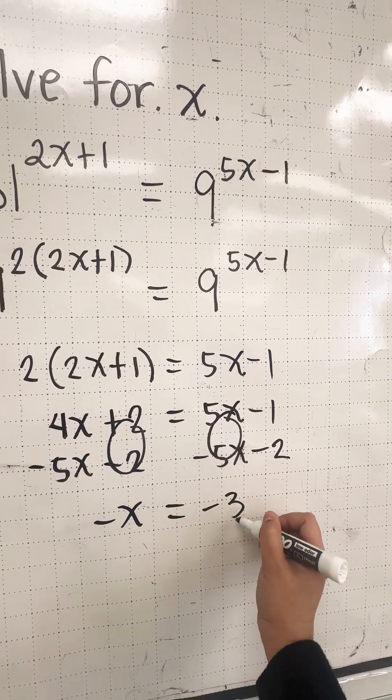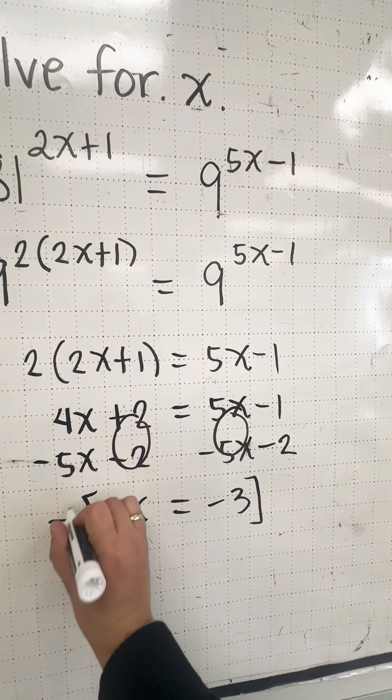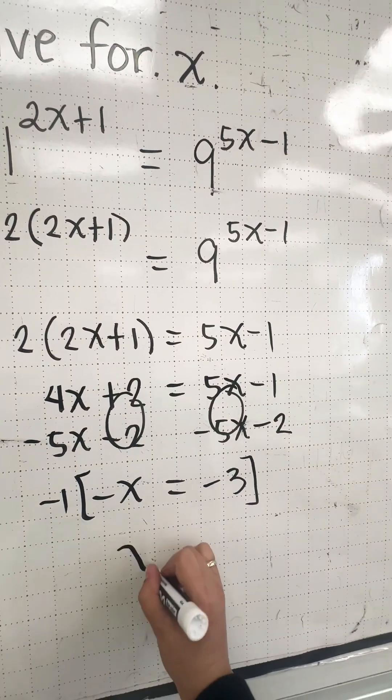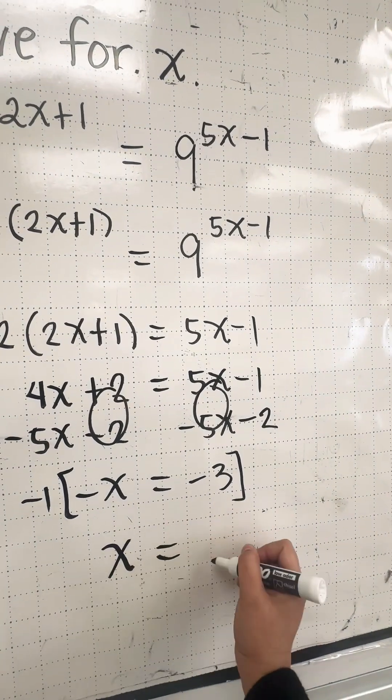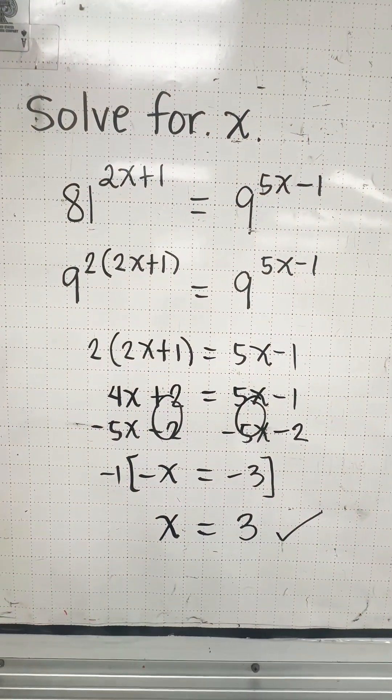Let's multiply the entire equation by negative 1 to make our x positive. So our x would be equal to positive 3. Hope you learned something, bye!